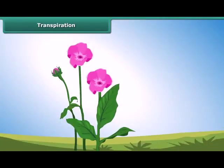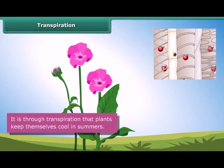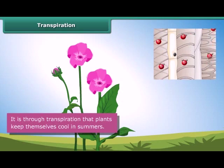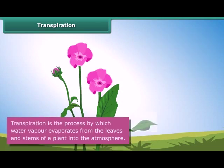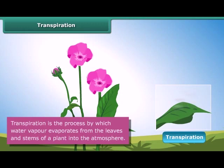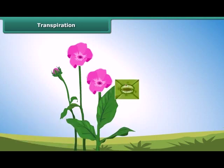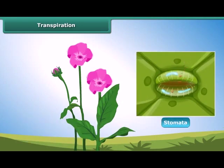An important function of the leaf is to keep the plant cool in summers. This is accomplished through transpiration. Transpiration is the process by which water vapor evaporates from the leaves and stems of a plant into the atmosphere. Small pores called stomata on the underside of the leaves facilitate transpiration.